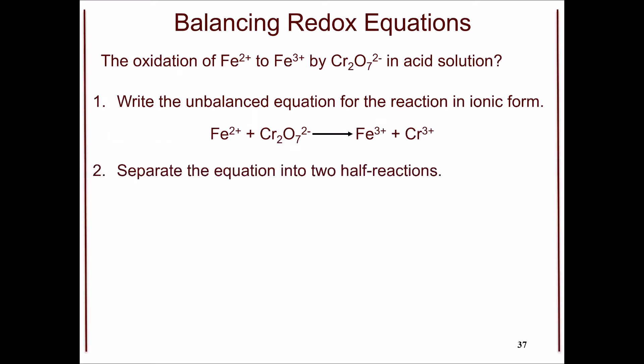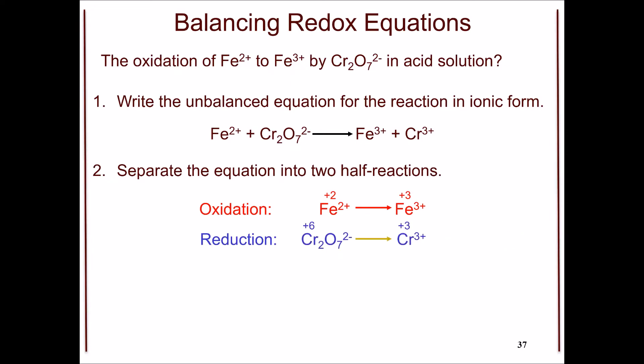The second step is to separate the equation into two half reactions: the oxidation half reaction and the reduction half reaction. The oxidation half reaction is the conversion of iron 2+ to iron 3+, which corresponds to a loss of one electron. The reduction half reaction is the reduction of chromate ion to chromium 3+, because the chromium center is changing from 6+ to 3+, so it's gaining electrons.